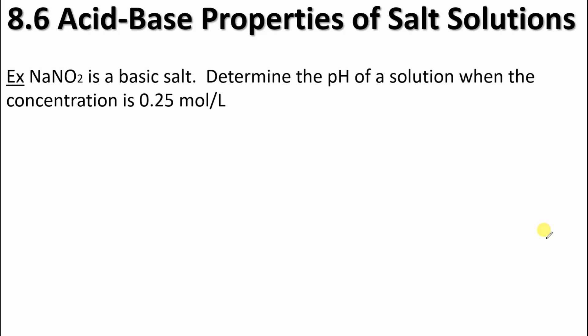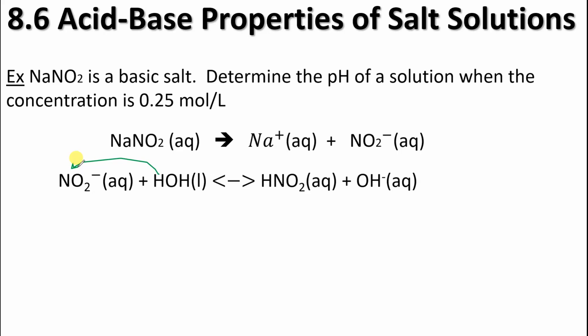Let's look at some examples here. So NaNO2 is a basic salt. Determine the pH of the solution when the concentration is 0.025 moles per liter. So it's basic. We're going to expect our pH to be greater than 7. So first thing we should do is take our compound and break it up into its two ions. And as we previously discussed, this sodium will not hydrolyze in water, but this NO2 is actually the culprit in this case. And there we go. We've got our basic OH.